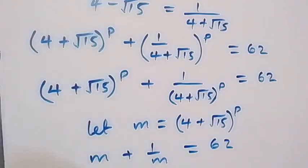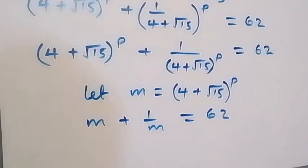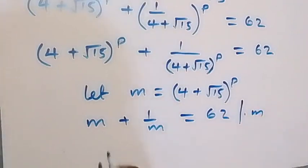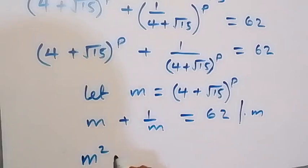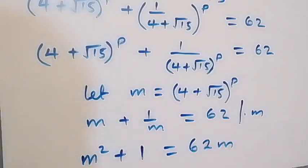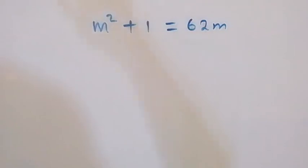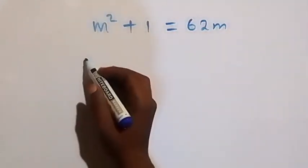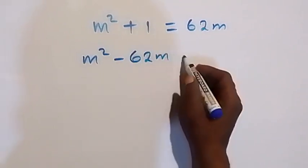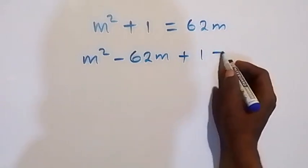From here, we can clear the fraction and multiply through by m. That gives us m squared plus 1 equals 62m. We can form a quadratic equation: m squared minus 62m plus 1 equals zero.